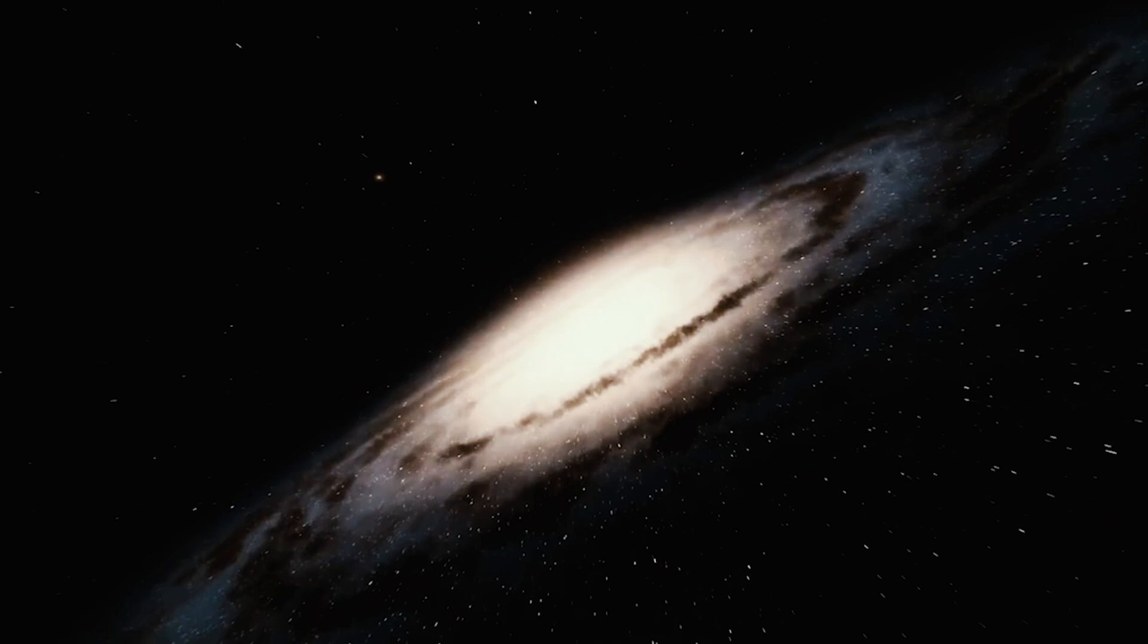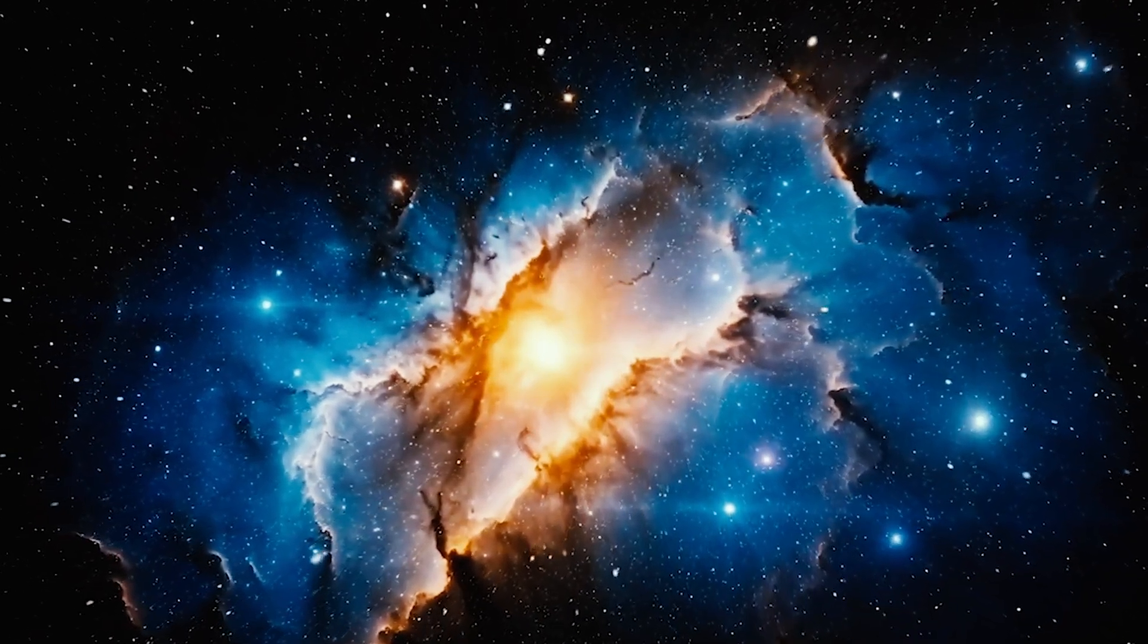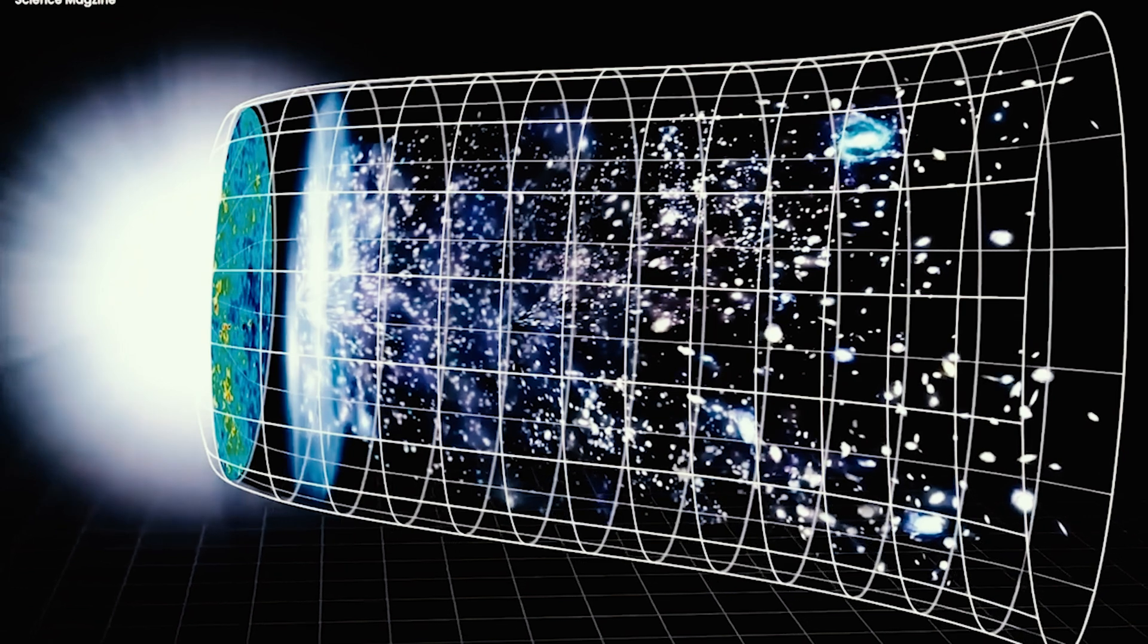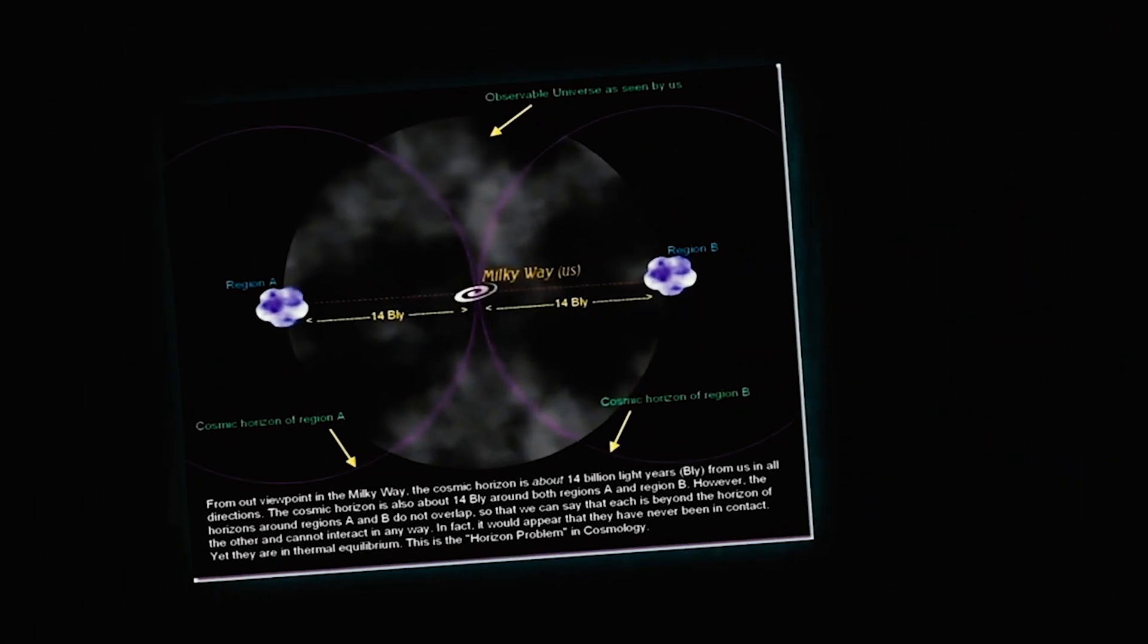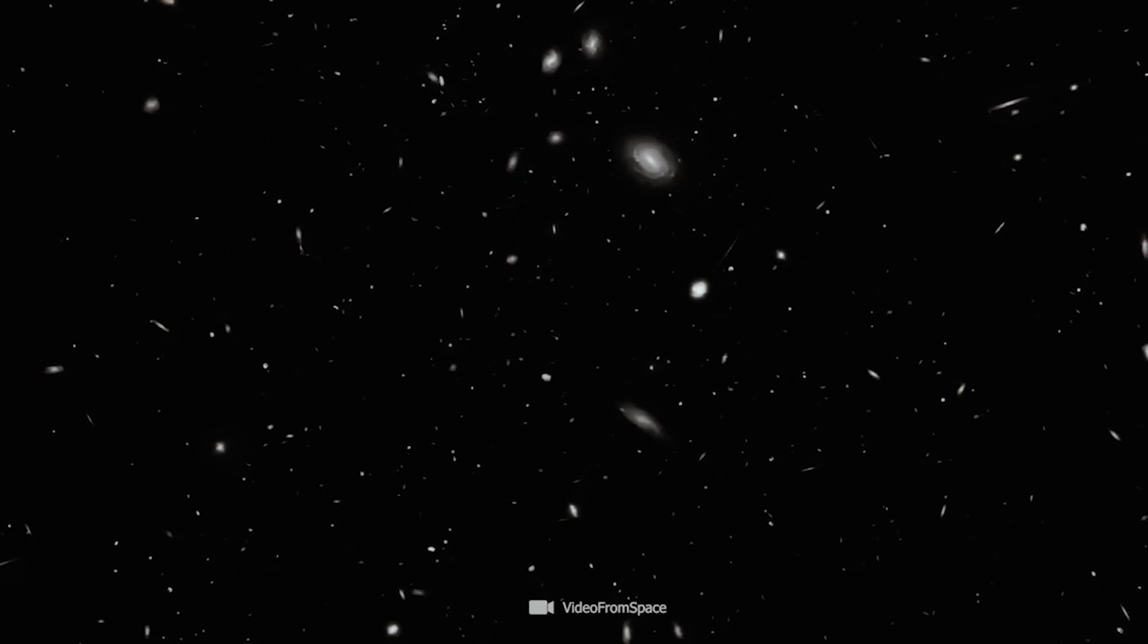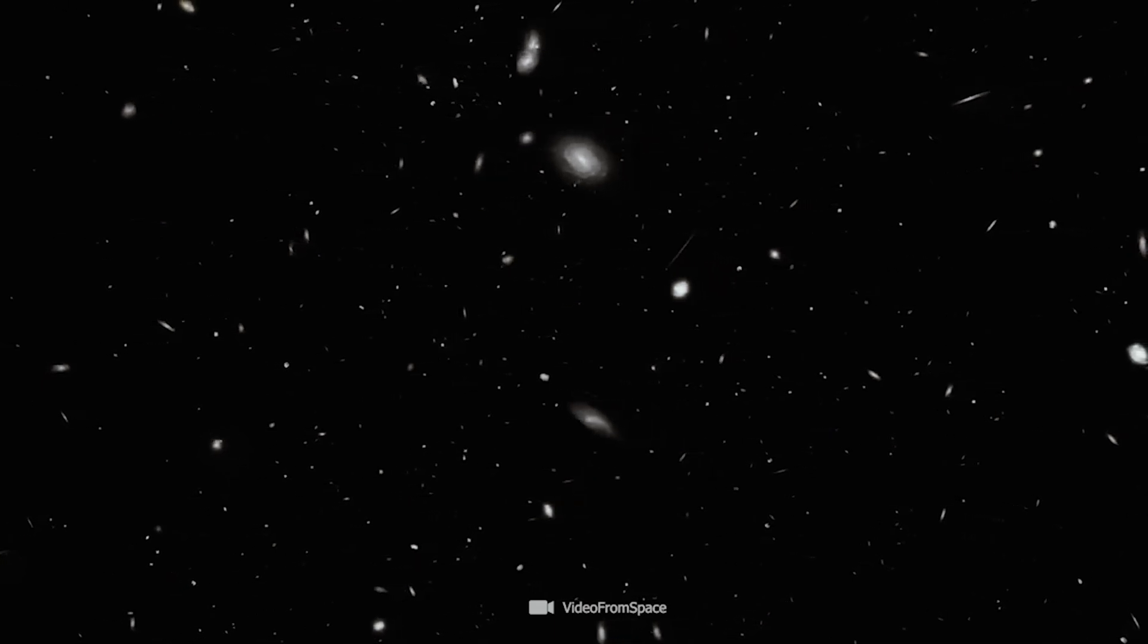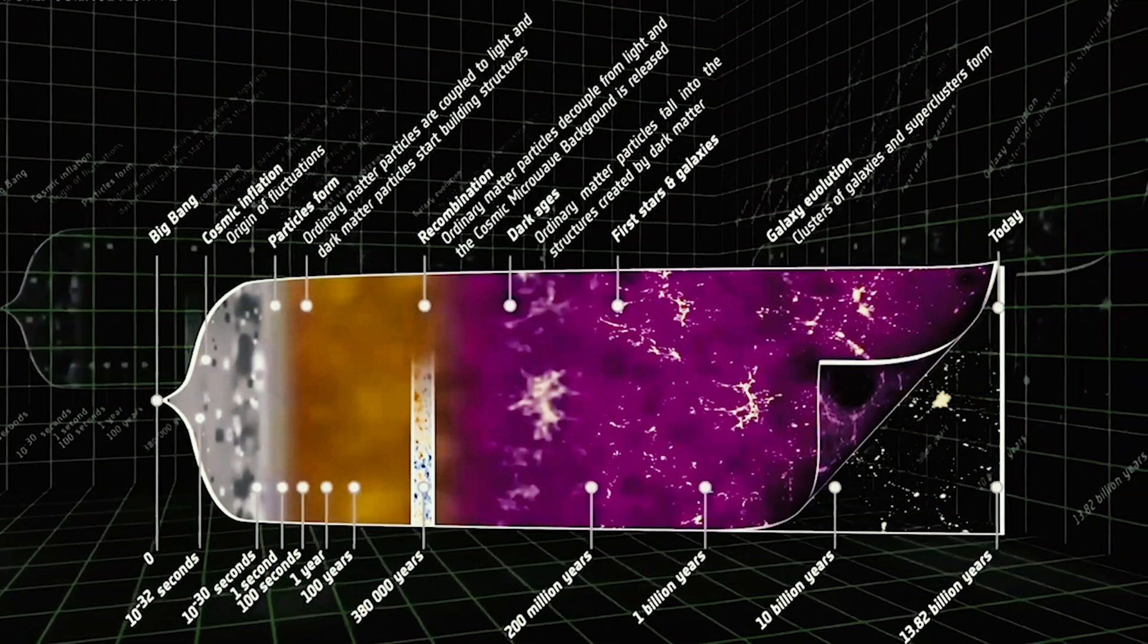However, the Big Bang theory is not perfect. It has some unresolved problems, such as the horizon problem, the flatness problem, and the singularity problem. These problems suggest that there might be something missing or wrong in our current model of the universe.